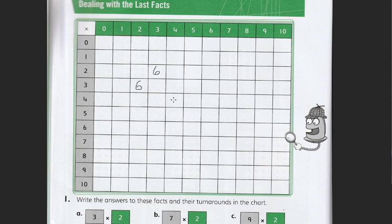So then it's asking for 7 times 2. So 7 times 2 is 14 and 2 times 7 is 14. Then it's got 9 times 2. 9 times 2 is 18 and 2 times 9 is 18.